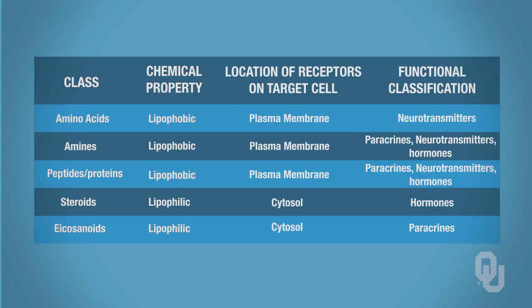This table illustrates the chemical classification of your messengers. Here are your five classes of chemical messengers, and this table gives you the chemical property. If you know whether a chemical messenger is lipophobic or lipophilic, that's going to help you determine how that ligand is synthesized and secreted, how the ligand is transported to the target cell, and how the target cell will respond.